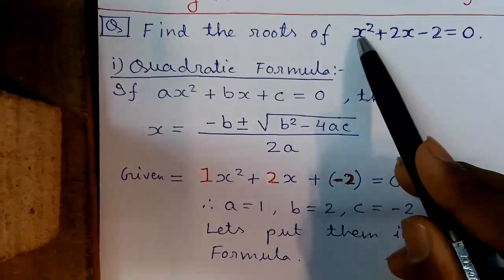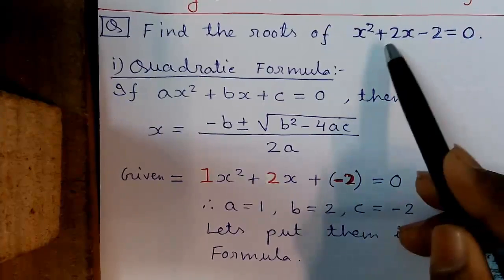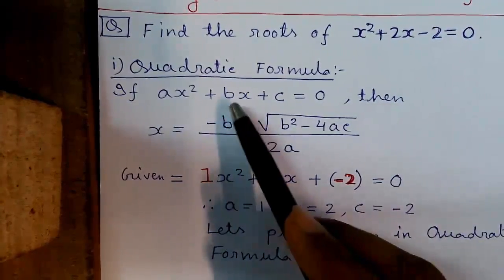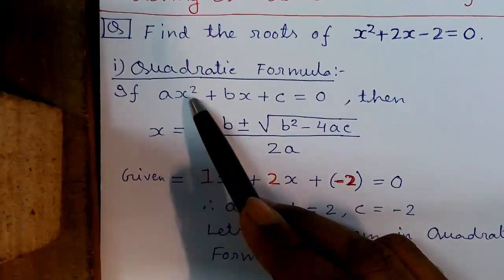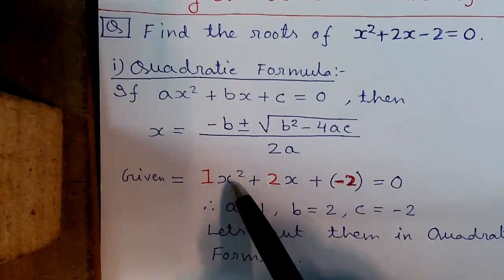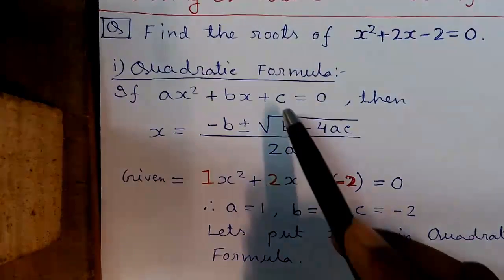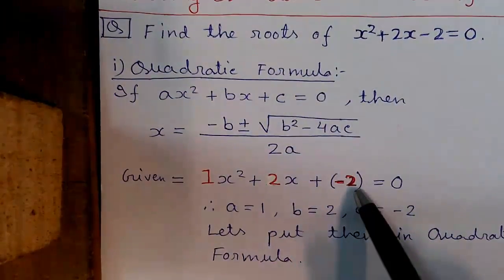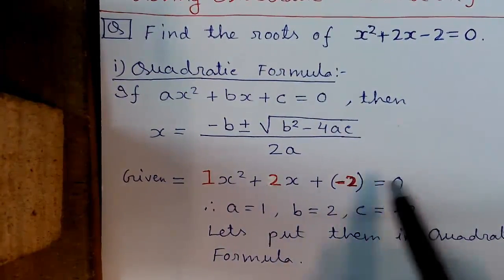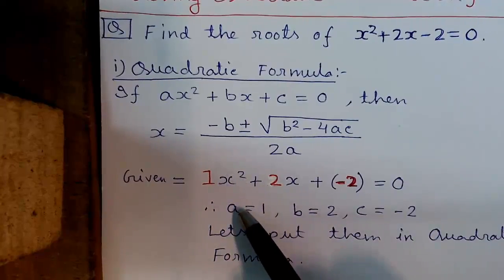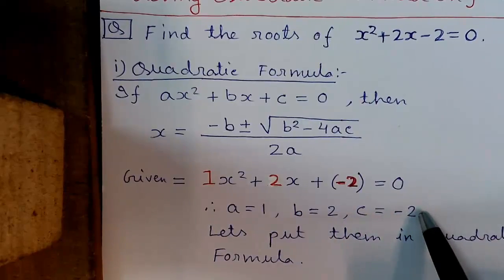So our original equation is X square plus 2X minus 2 is equals to 0. Now if we frame this equation according to the quadratic formula, we get 1X square plus 2X plus minus 2 equals to 0. So framing the equation gives us the value of A equals to 1, B equals to 2, and C equals to minus 2.